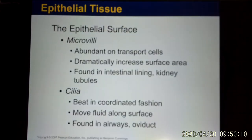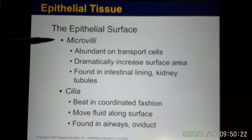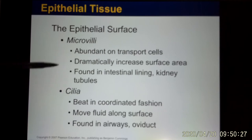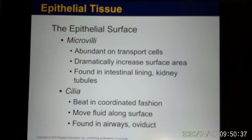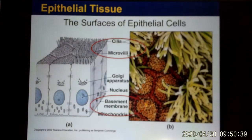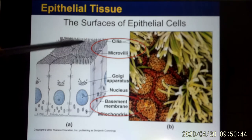On the apical side, epithelium cells have microvilli or cilia — they look similar but are functionally different. Microvilli don't move; their function is to increase surface area, like in your small intestines. Cilia can move; their function is to trap dirty particles and send them out, so you find cilia in your airway and microvilli in your small intestines.